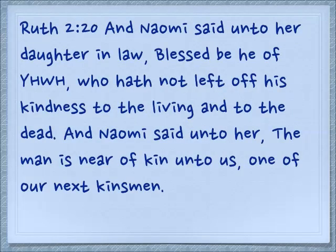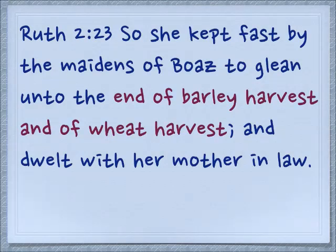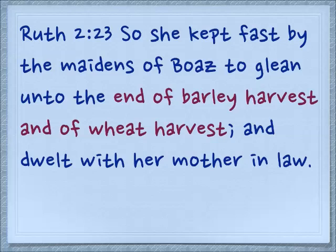In Ruth 2:20, Naomi reveals who Boaz is — one of their goel, a near kinsman: 'And Naomi said unto her daughter-in-law, Blessed be he of Yahweh who hath not left off his kindness to the living and to the dead. And Naomi said to her, The man is near of kin unto us, one of our next kinsmen.' We see that Ruth stays on until an appointed time. There is a reason she must wait a certain amount of time: according to traditional Jewish law, a widow must wait at least three months before she can remarry so that they can be sure of the paternity of any following children.